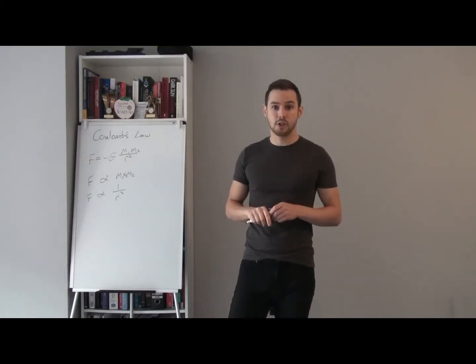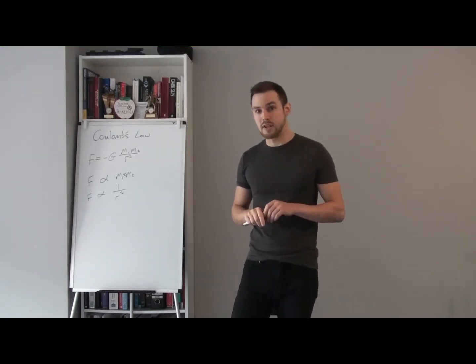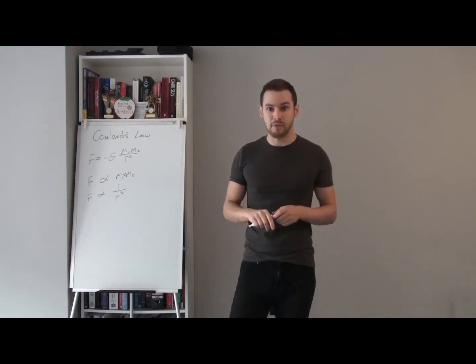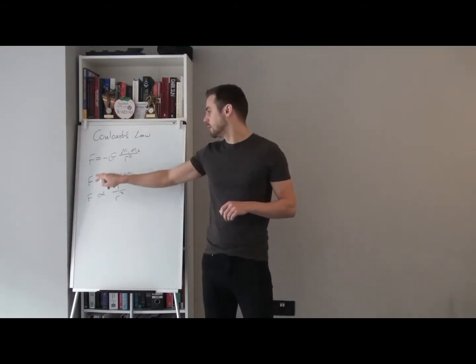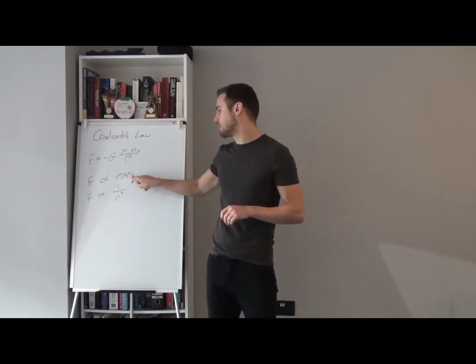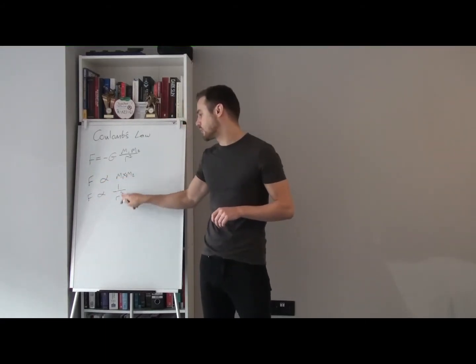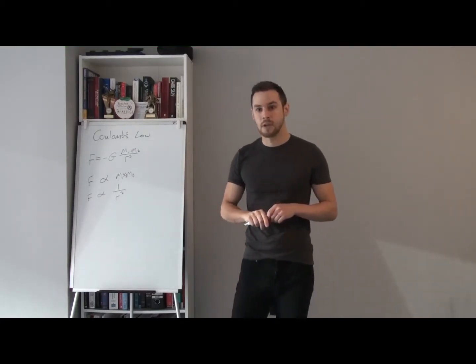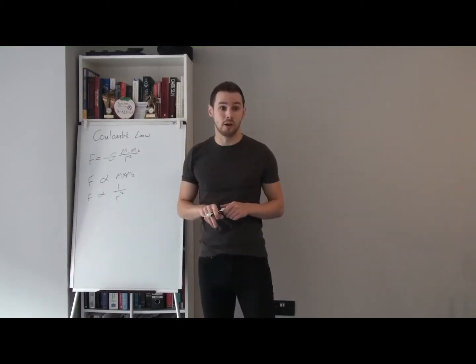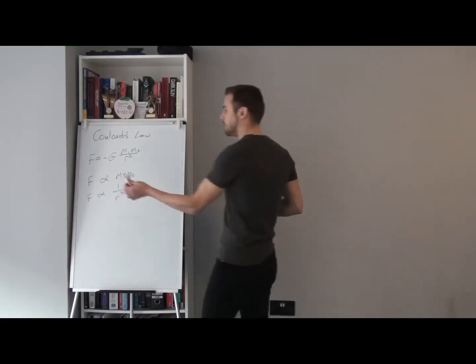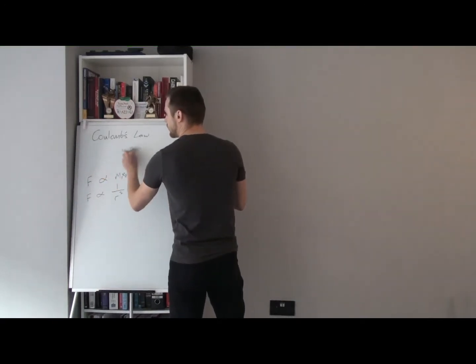Now, we can do the same thing for Coulomb's law. So, if it were to ask you in an examination situation, what is the definition of Newton's universal law of gravitation? You would say the force between two masses is proportional to the product of those masses, and inversely proportional to the square of the distance between them. Now, we can do the same thing for Coulomb's law. So, let's just remove Newton's law of universal gravitation.